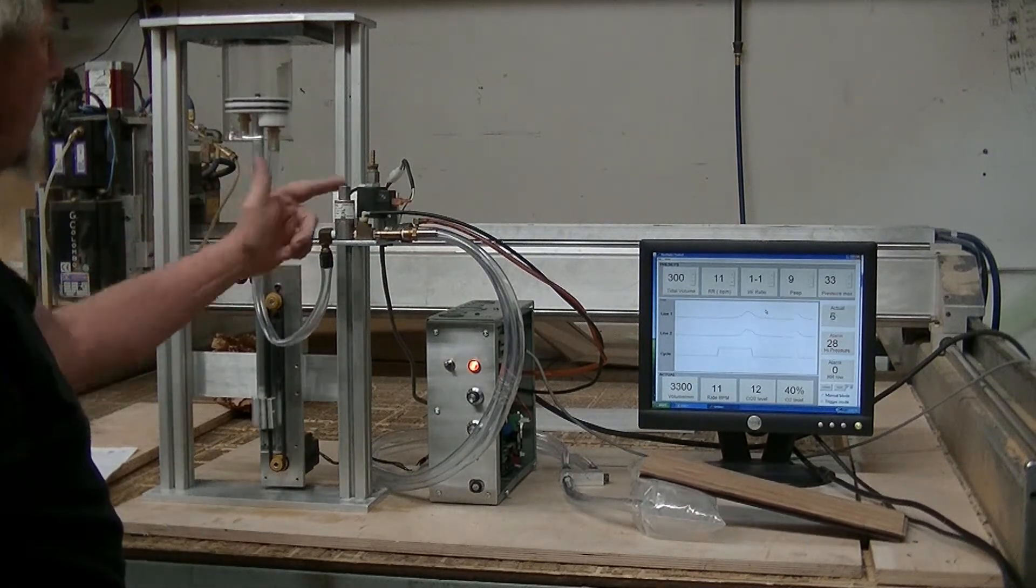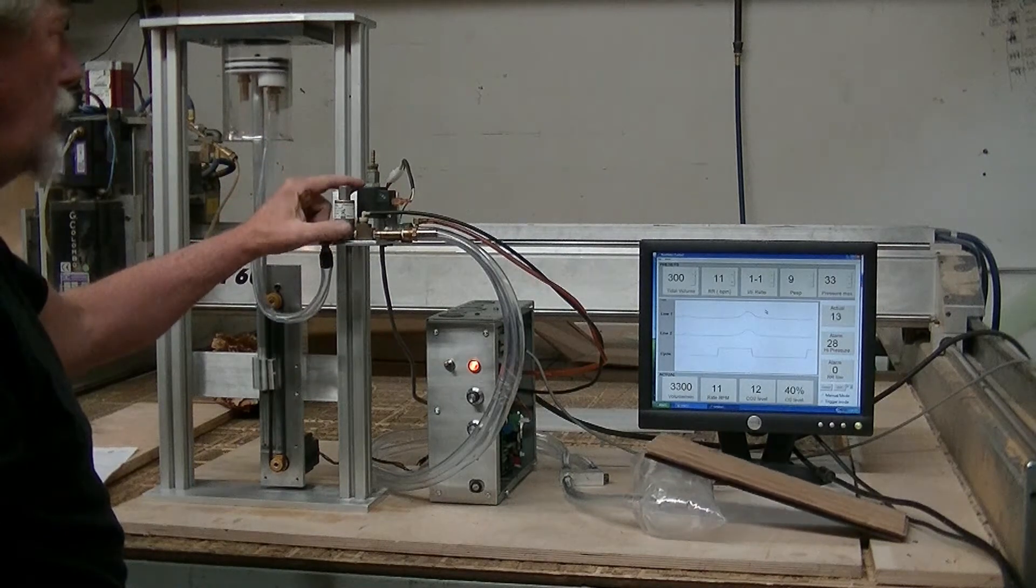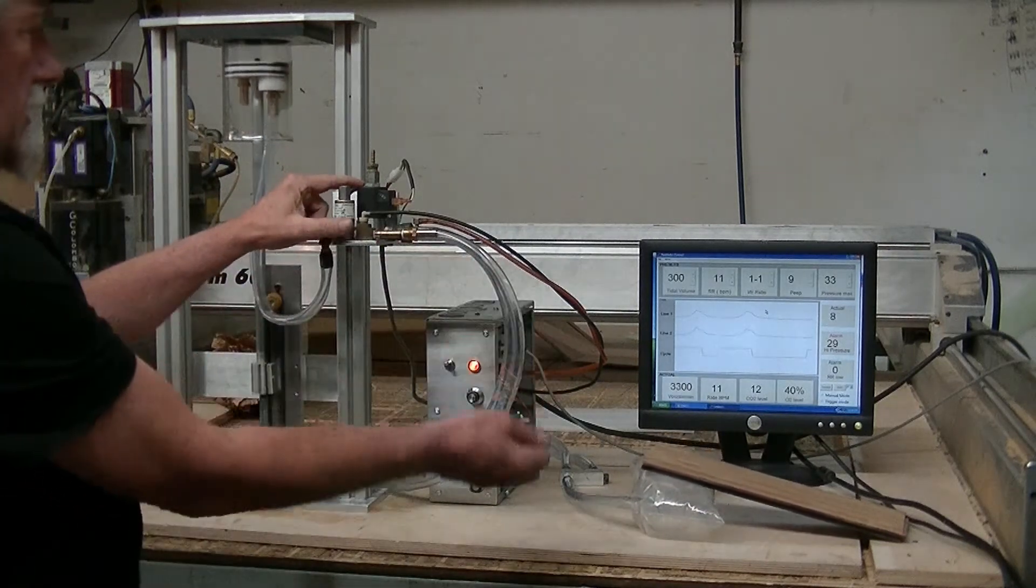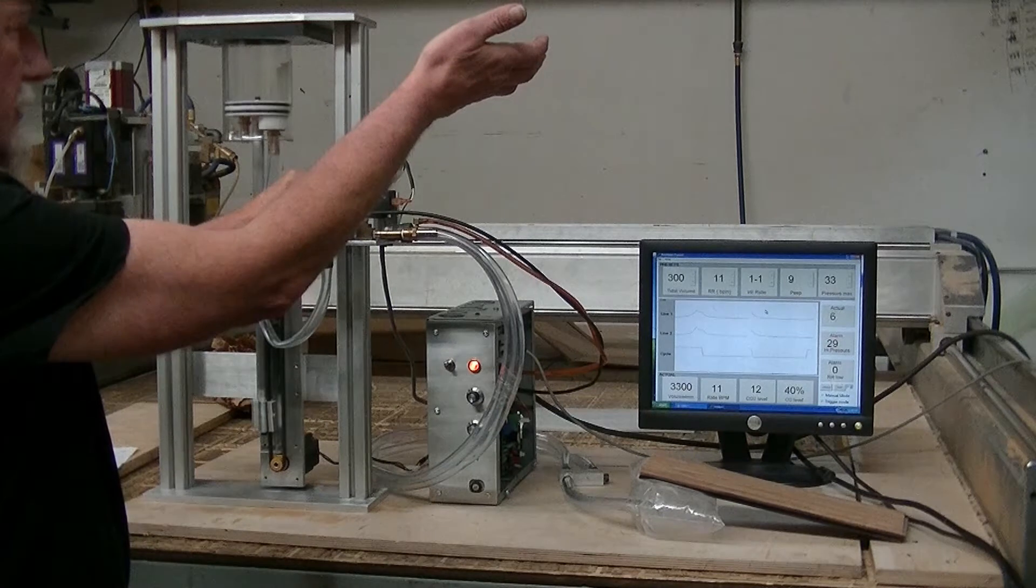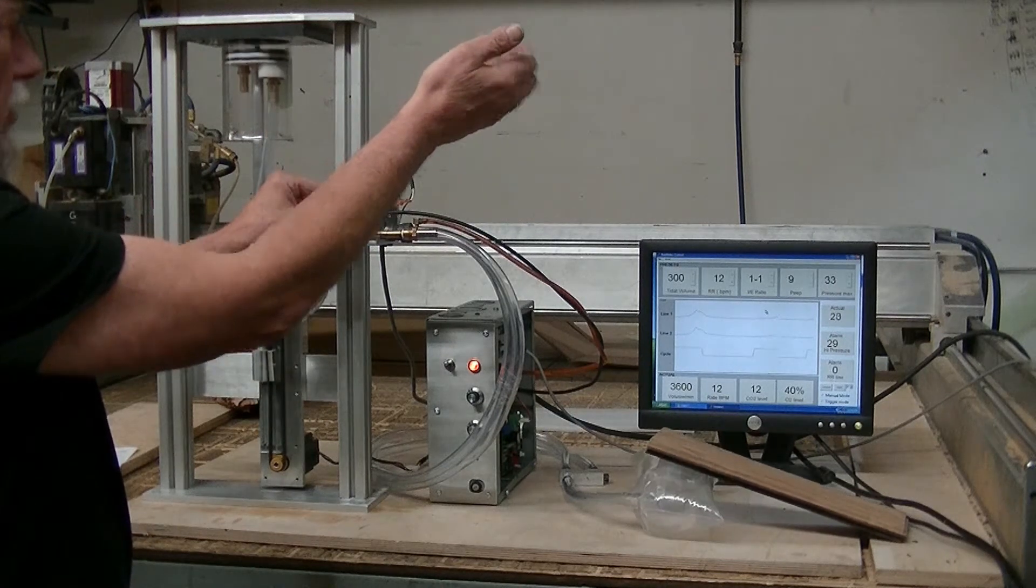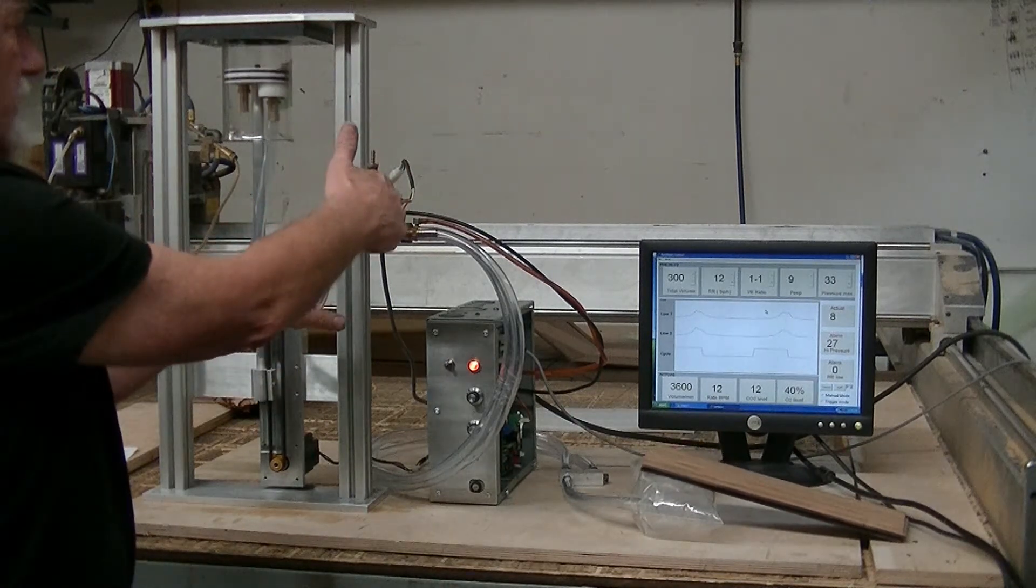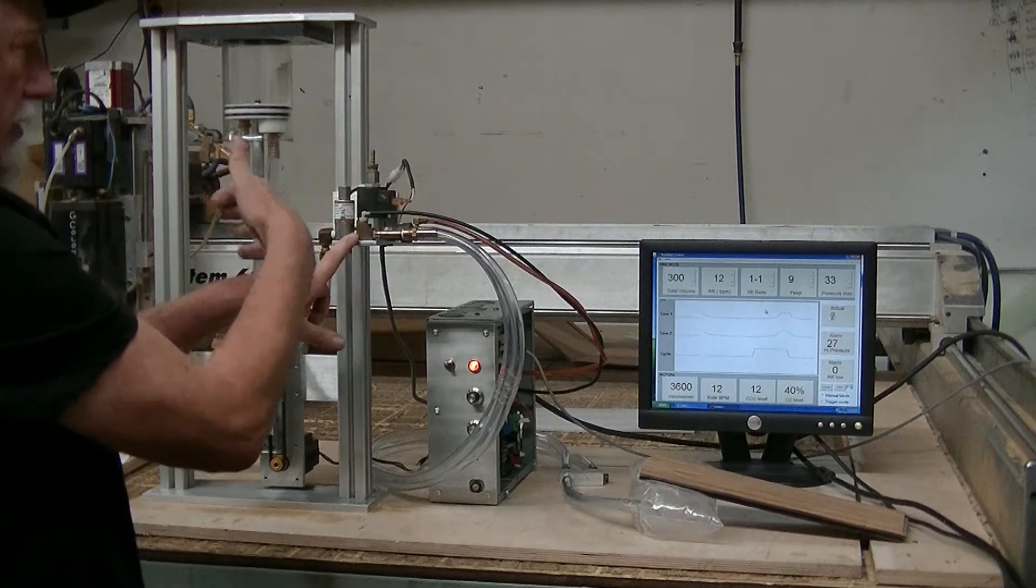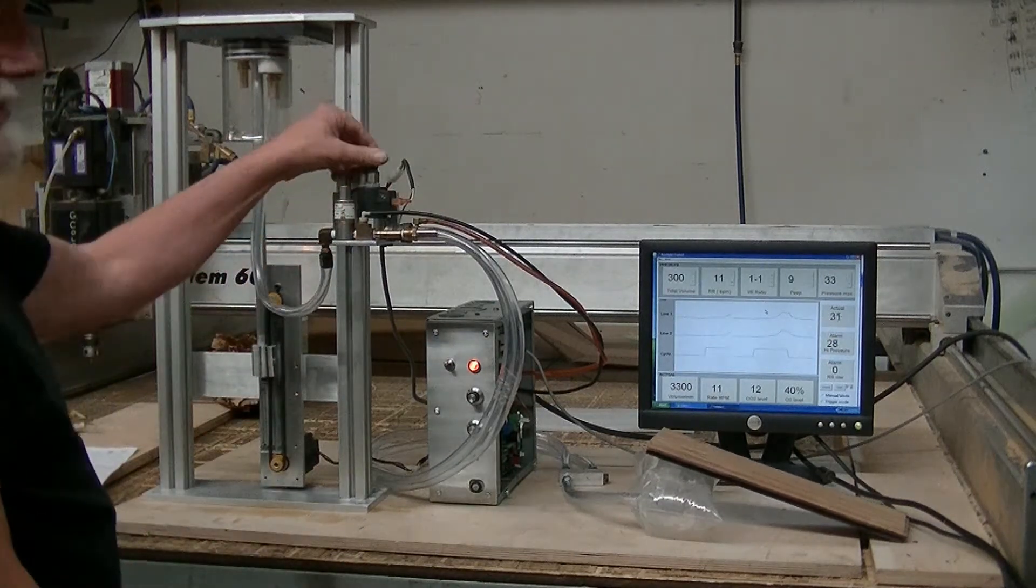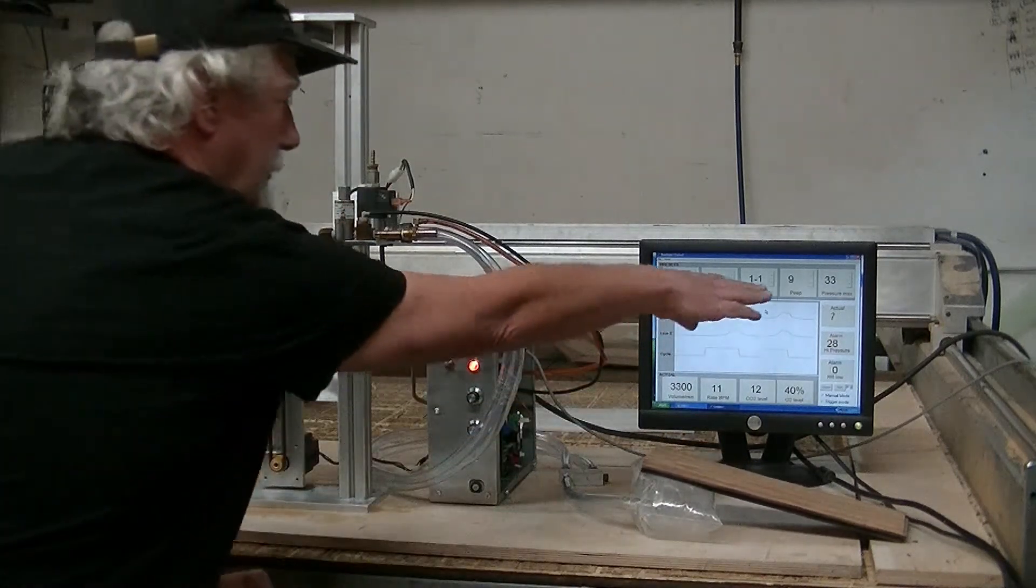The first thing it does is before a stroke closes the exit valve, opens the entry valve, builds the pressure up. Now when it hits the top or a preset pressure, it opens the exit valve to release the pressure. Now it will also open the exit valve if it hits a maximum set pressure as well.